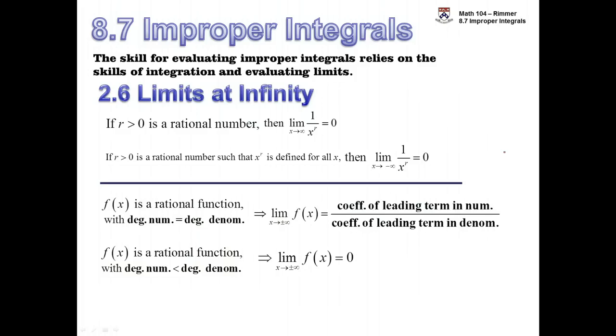And then finally, if you have the other way around where your numerator degree is more, then you can confidently say that the limit doesn't exist. And the reason being, it's going to be plus or minus infinity based on a few factors that you wouldn't have to worry about. But at that point, you just say the limit doesn't exist and you move on for improper integrals sake.